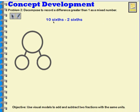Let's think about this one, 10 sixths minus 2 sixths. If I had 10 of something, and I subtracted 2, I would have 8 left over. So in this case, it would be equal to 8 sixths.